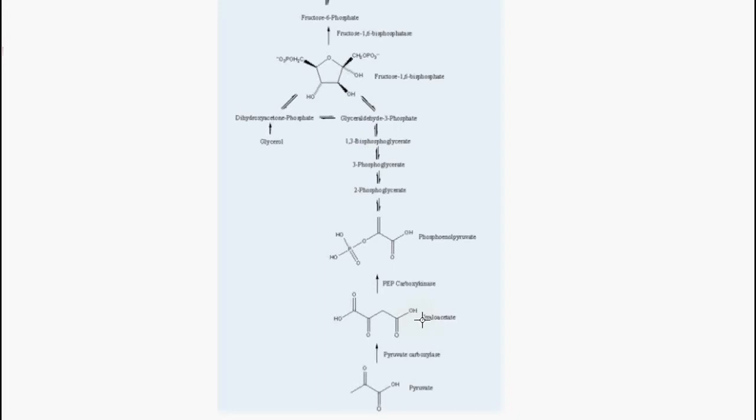Now we have high levels of oxaloacetate in the mitochondria, and it must be converted into phosphoenolpyruvate. However, this conversion occurs in the cytosol, so we must move oxaloacetate into the cytosol.